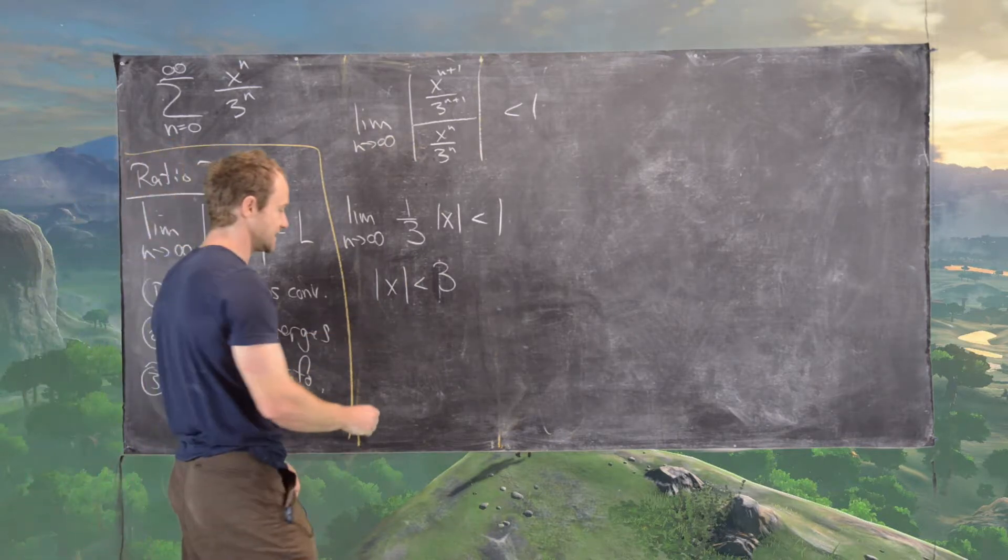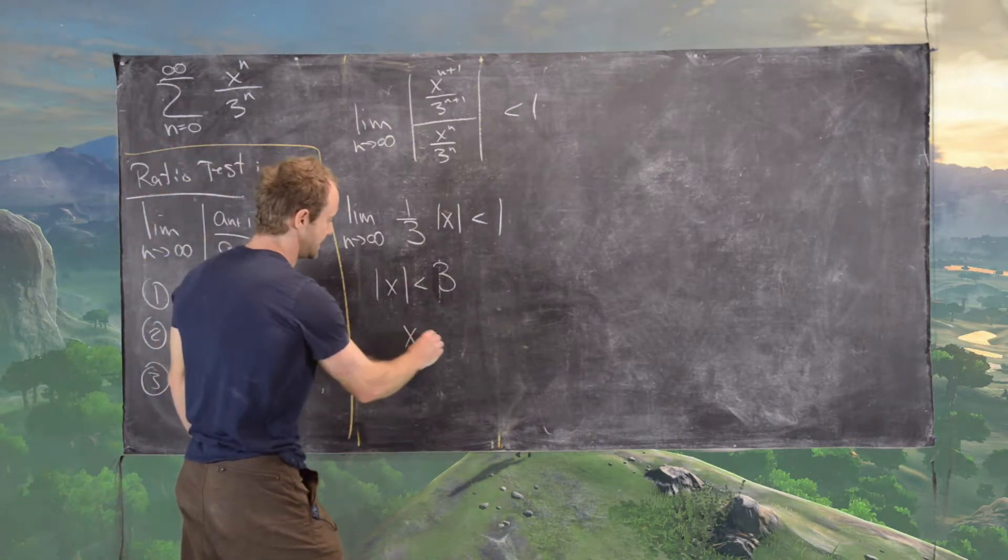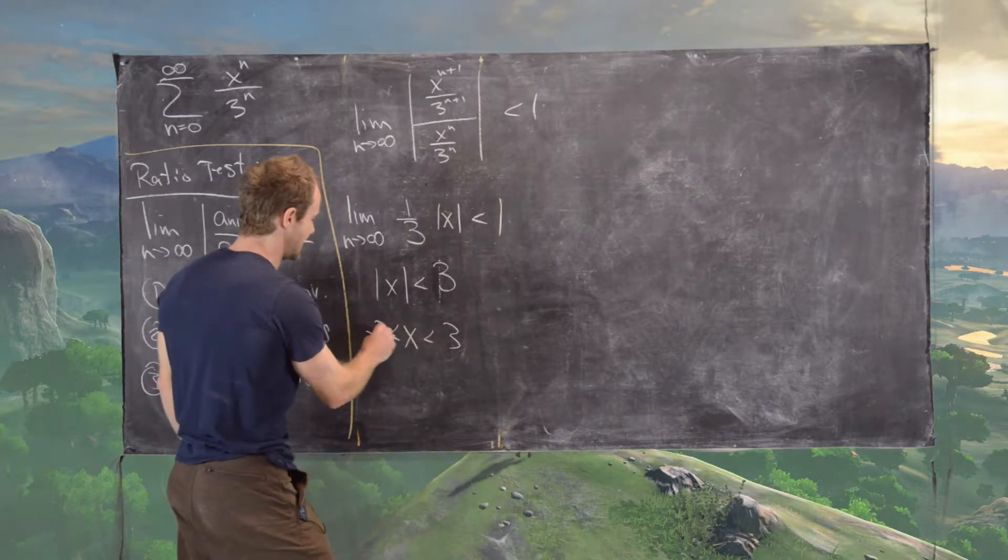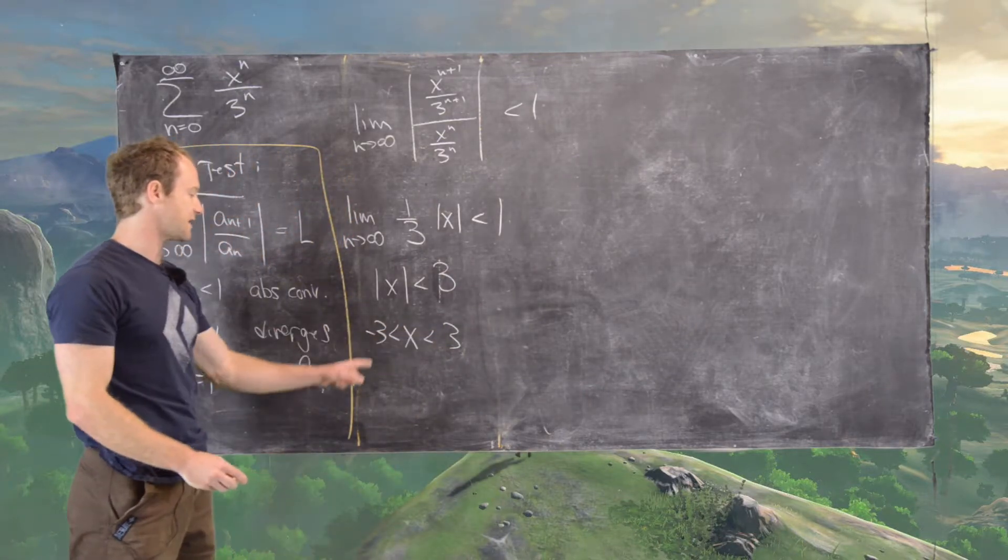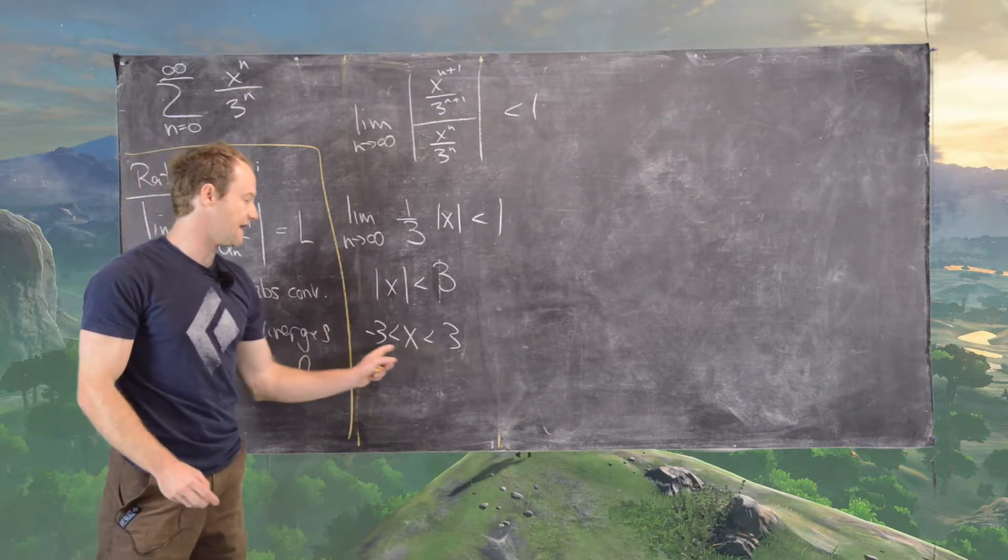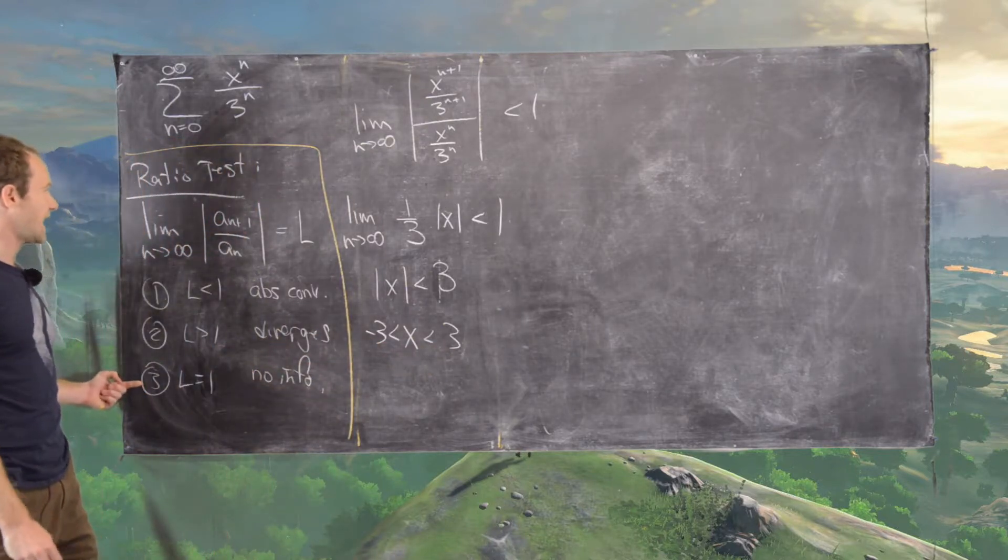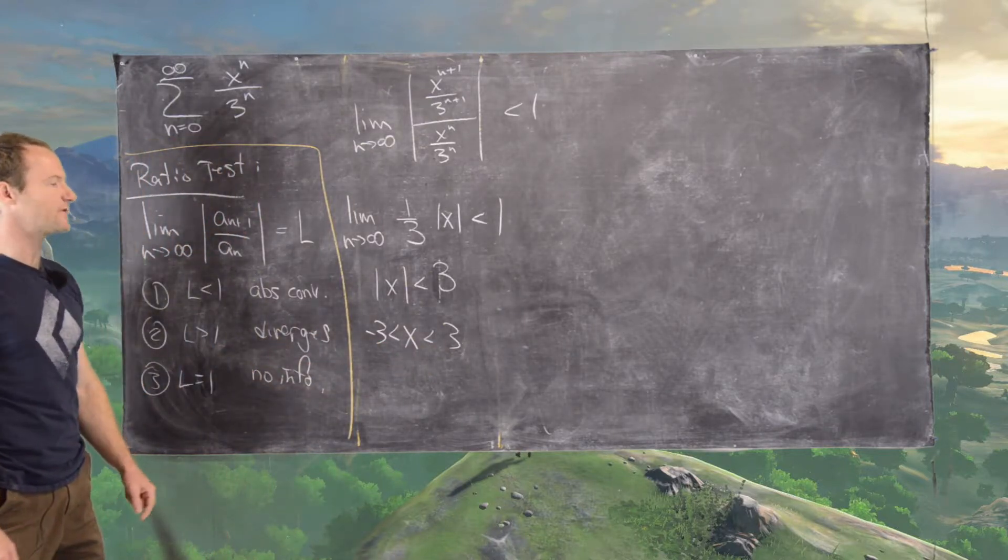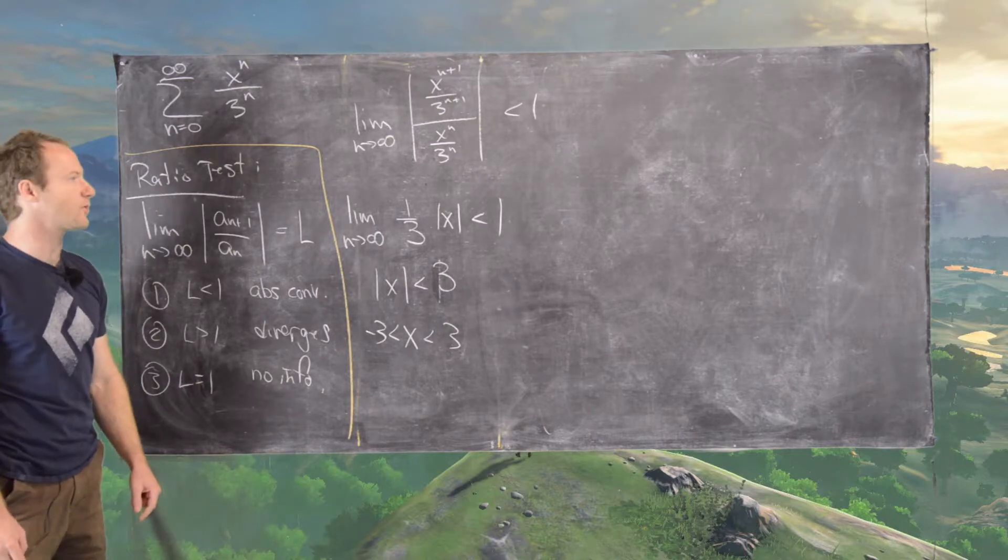Okay great. So now what that tells us is that x needs to be between 3 and negative 3. But the question still remains, what happens at 3 and negative 3? And so in that case, the ratio test will give us no information, so we need to test the end points separately.